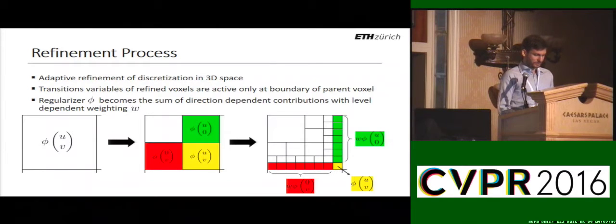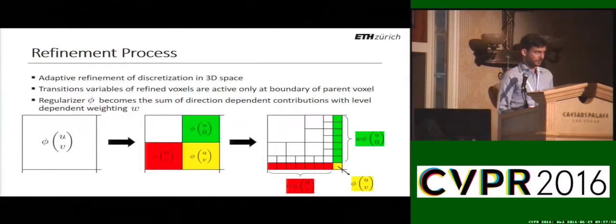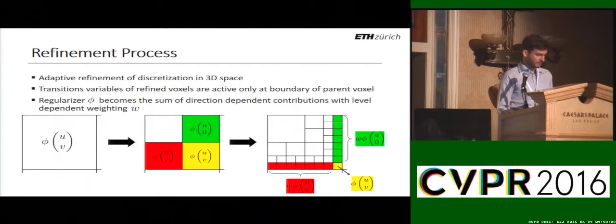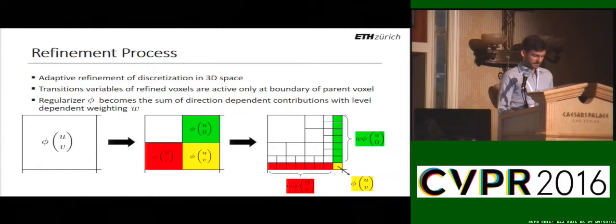Let's have a look at the key features of the refinement process. We employ an adaptive multi-resolution model which is progressively refined only close to the predicted class boundaries, in contrast to an octree whose structure would be fixed from the beginning. After a voxel is refined, the new transition variables become active only at the boundaries of the parent voxel, as illustrated in the middle figure with colors red, green, and yellow. When performing an arbitrary number of refinements, the regularizer needs to be re-weighted and the direction-dependent contributions of the active transition variables are summed up.